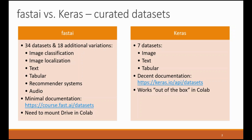FastAI supports 34 datasets with an additional 18 variations, for a total of 52 curated datasets. These datasets cover a broad range of use cases, including image classification and localization — that is, finding the location of an object in an image — text, audio, tabular datasets, and datasets for training recommender systems.